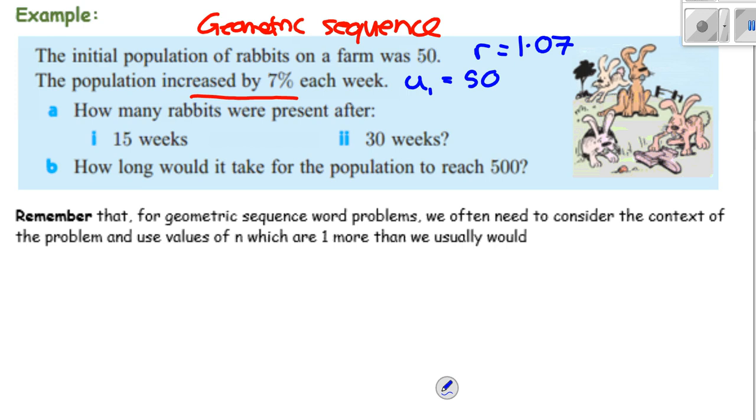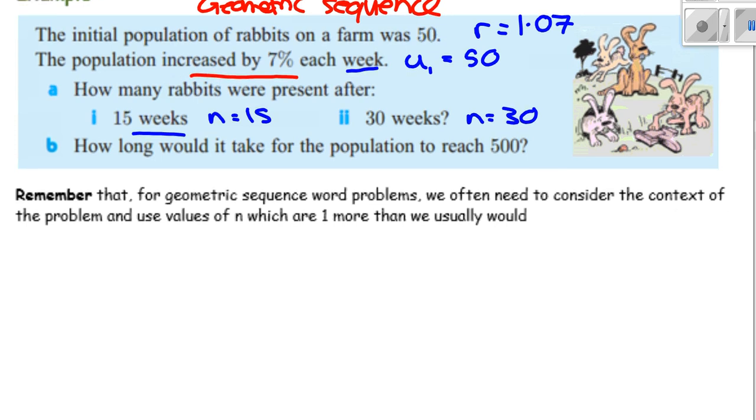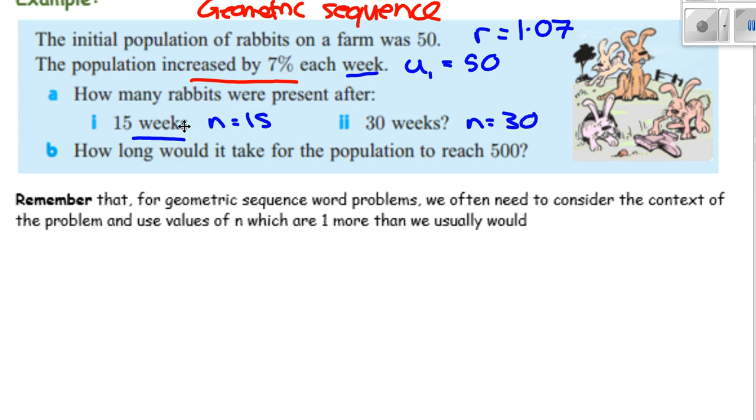How many rabbits were present after 15 weeks? So according to this one, what's our n? Yeah, just check, is it about weeks or months or years? They do say each week. So those two questions are nice and straightforward, we just have to apply the formula. So do they want to know uₙ or the sum?